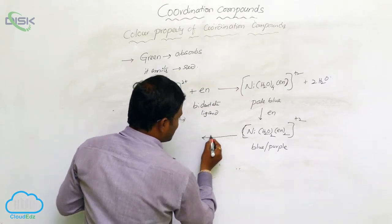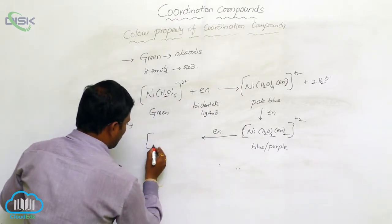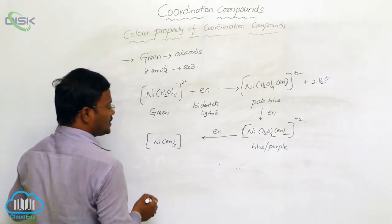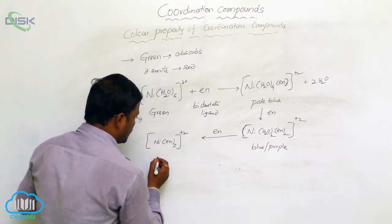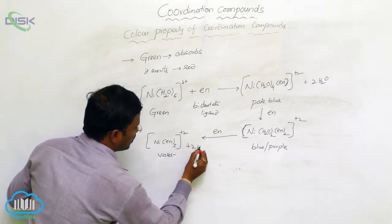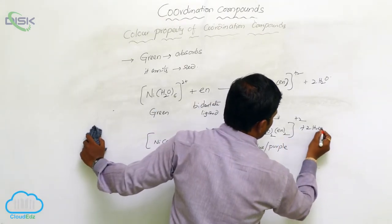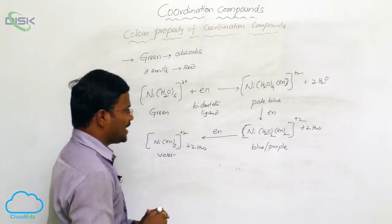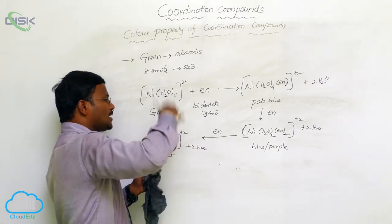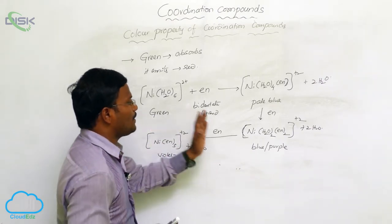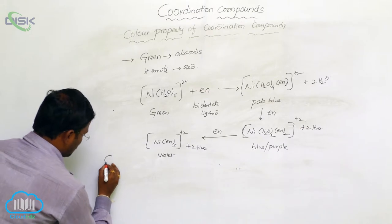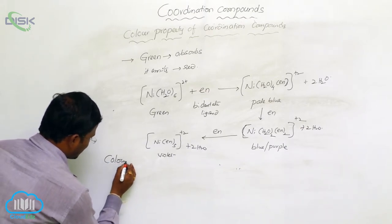When the resulting compound again reacts with one more molecule of ethylenediamine, it finally results in the formation of three ethylenediamines substituted onto nickel and results in violet color with the formation of two water molecules. By changing the number of water molecules or substituting one type of ligand with other ligand, the color properties of coordination complexes also change.